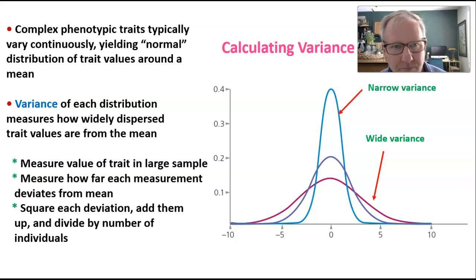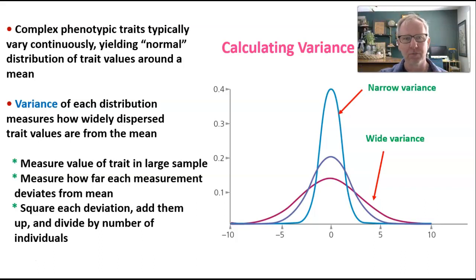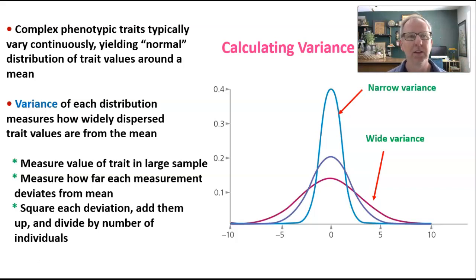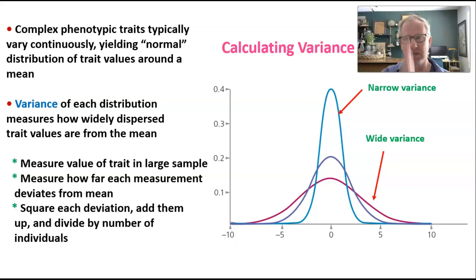Complex phenotypic traits like coat color on old field mice and skin color in human beings typically vary continuously. If we graphed them, we'd see a smooth range of variation rather than blocks of variation — not just black and white comparisons. Think of skin color: if you randomly selected a thousand people and documented the range of skin color variation, you would see a smooth, continuous relationship — a normal distribution of traits around a mean in the middle, with a range of variation on either side.